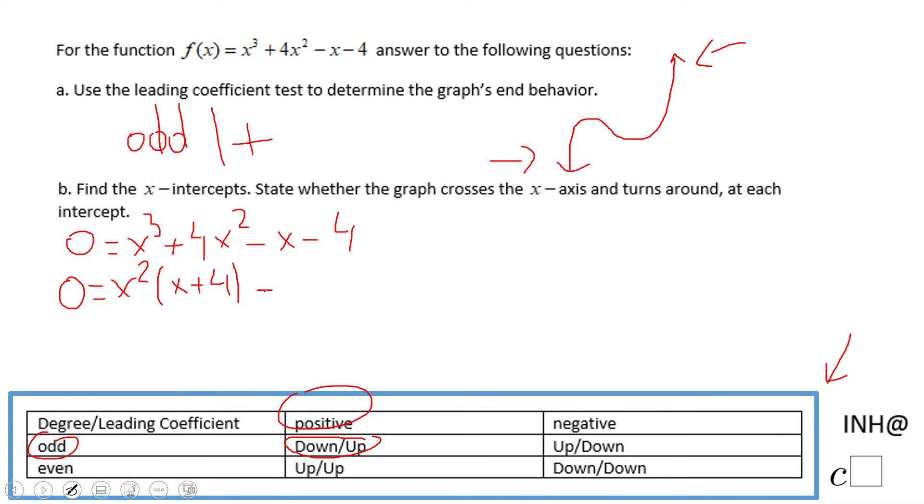For the last part we're going to factor out a negative because we want to get that (x + 4) we notice in the first factoring. Then we notice we have this (x + 4) as a common factor.